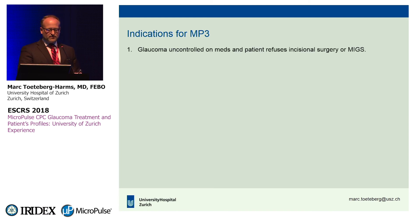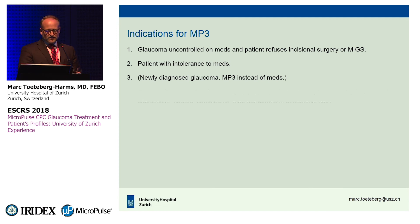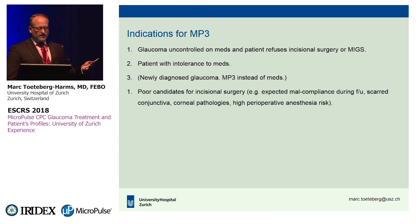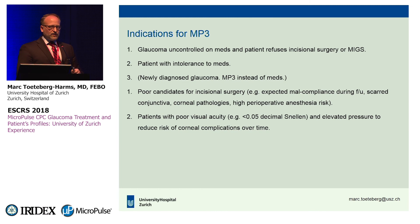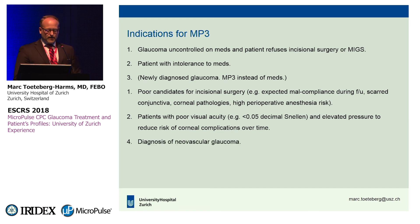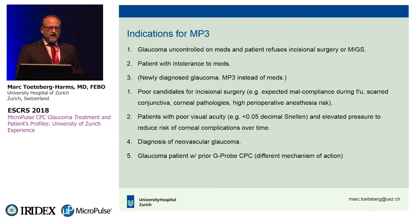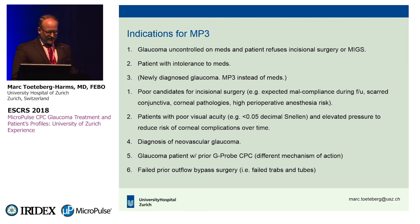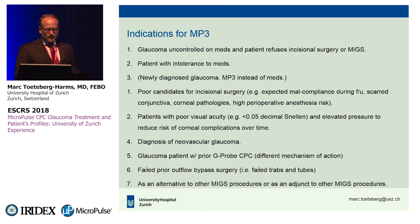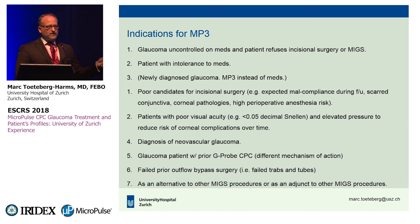To summarize, indications for MP3 include: uncontrolled glaucoma, intolerance to medications, newly diagnosed glaucoma instead of medications, poor candidates for incisional surgery, medication non-compliance, patients from rural areas where follow-up isn't guaranteed, poor visual acuity with high pressure to avoid corneal complications, neovascular glaucoma, after a G-probe procedure since it has a different mechanism of action, after failed prior outflow bypass surgery, and as an alternative to or in conjunction with other mixed procedures — for instance when you need a little more reduction beyond the 14–16 mmHg a MIGS procedure achieves.